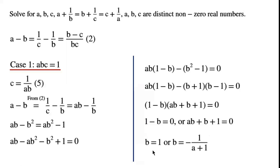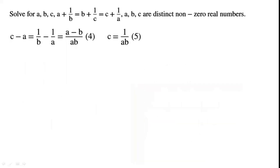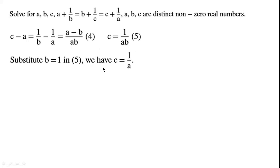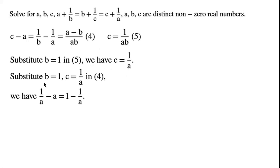We substitute B equals 1 and C equals 1 over A. In equation 4, we have 1 over A minus A equals 1 minus 1 over A.